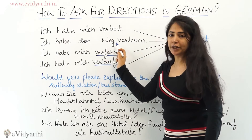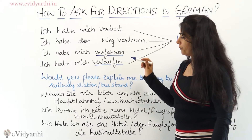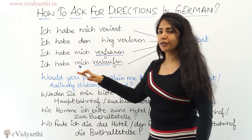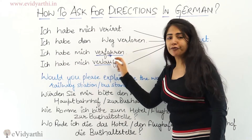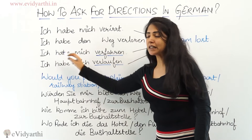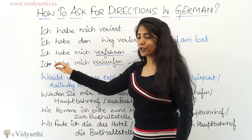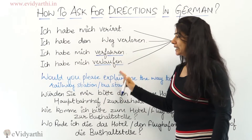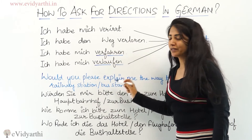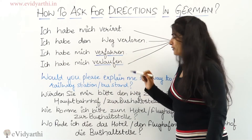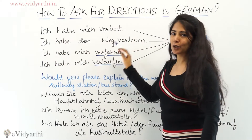'Den Weg' means 'way.' If you are driving and you lost your way while driving, you can say 'Ich habe mich verirrt.' And if you lost your way while walking, then you can say 'Ich habe mich verlaufen.' So there are different ways of saying 'I lost my way.'